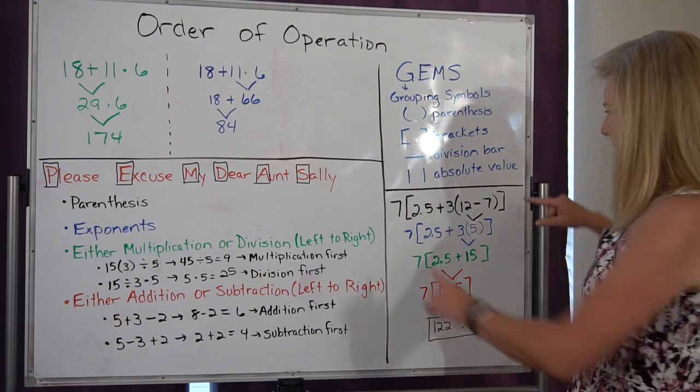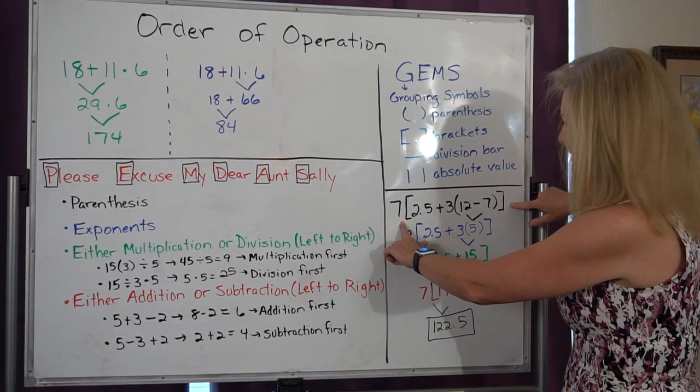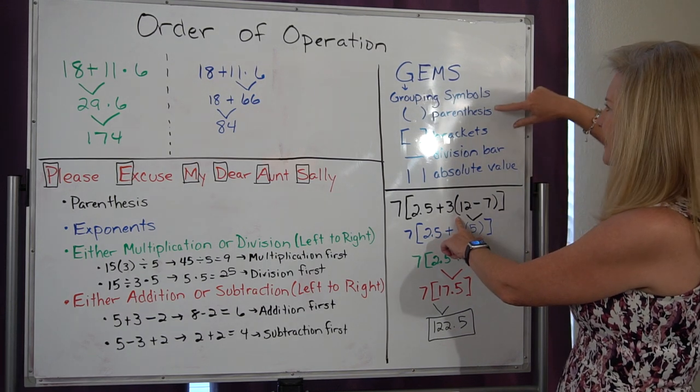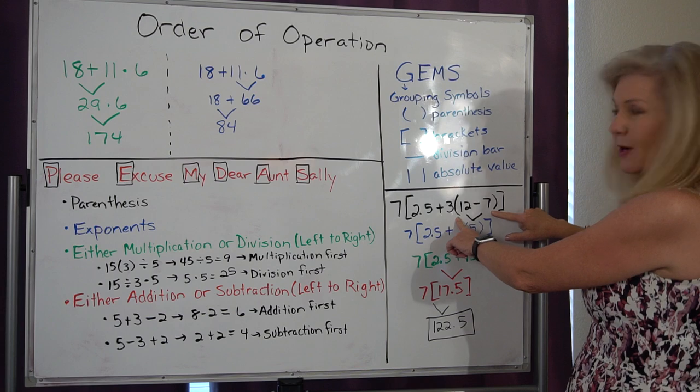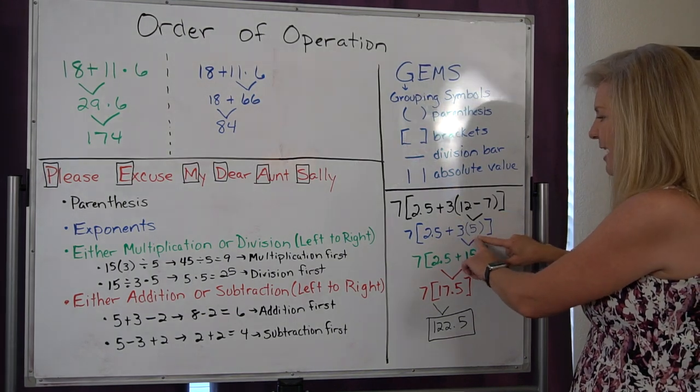I start inside my brackets, but then I have to start inside my parentheses because I have to do my grouping symbols first. So I would do 12 minus 7 first and I get 5.